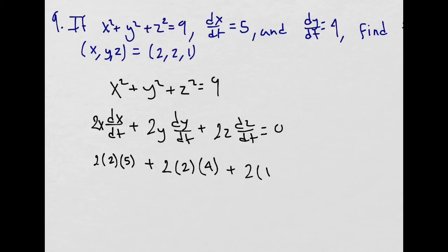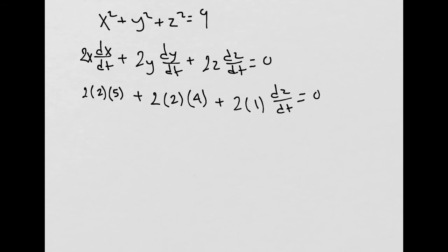And z is 1 and we're looking for dz/dt, all equals 0. Now we don't have any more variables, so all we have to do is solve for dz/dt and that will be our answer. So here we get 20, here we get 16.